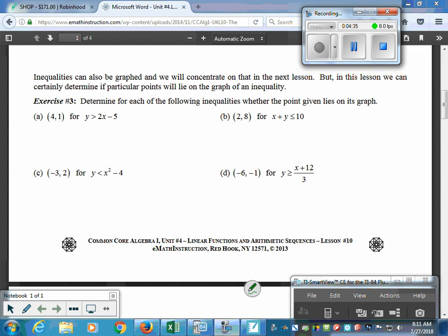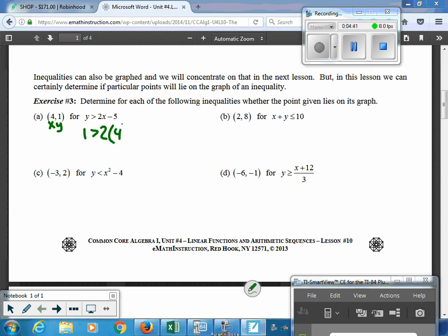So, in this case, again, I have x and y values, so I'm going to put in 1 where the y is. And I got 2 times 4 minus 5. And, again, you type the right-hand side in the calculator. This one, you get 1 is greater than 3, which, in this case, is a false. You put false or no, either one. So, that one does not lie on the graph.